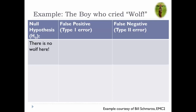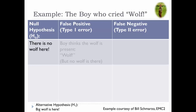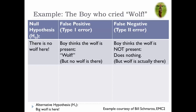Let's use the classic fairy tale of the boy who cried wolf as an example — my thanks to Bill Schmarzov of EMC squared for the idea. If the null hypothesis is that there is no wolf, the alternative hypothesis would be that the wolf is actually there. So a Type 1 error, or false positive, would be the boy crying wolf when there is no wolf present, rejecting the null in favor of the alternative hypothesis. However, if the boy does not notice the wolf or convinces himself it's not there — accepting the null over the alternative hypothesis — a Type 2 error, or false negative, would be doing nothing, not crying wolf.